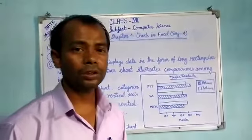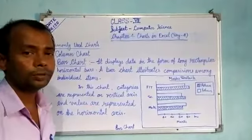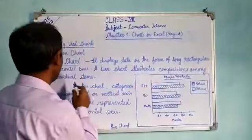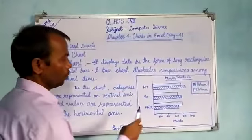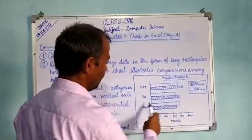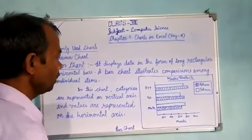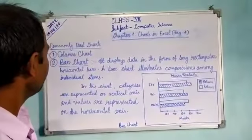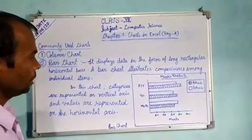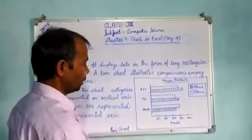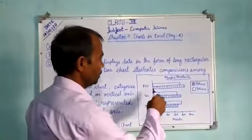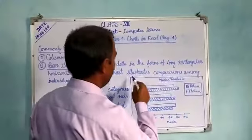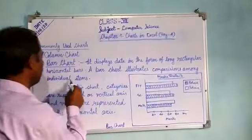In the last class I discussed the column chart, and in this video I am going to discuss the bar chart. Bar charts display data in the form of long rectangular horizontal bars. Here the bars are represented in the horizontal base. This is the basic difference between the column chart and bar chart — in column charts bars are vertical, but in bar charts they are horizontal. A bar chart illustrates comparisons among individual items.